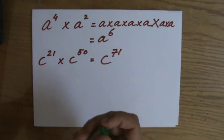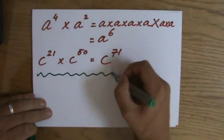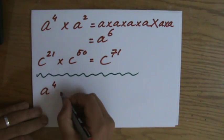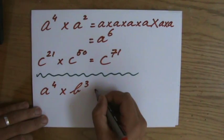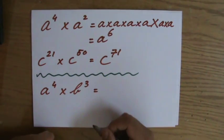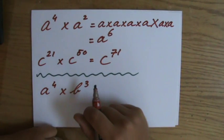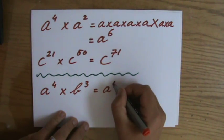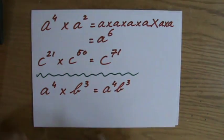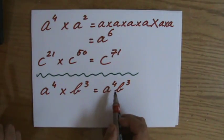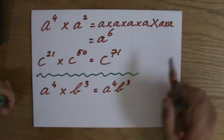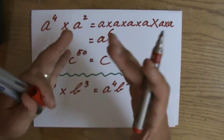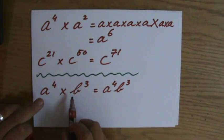I want to emphasize again that the base needs to be the same. So a to the power 4 times b to the power 3 — is the base the same? No. So can I apply the first law of the indices? No. The answer to this question would be a to the power 4, b to the power 3. You just glue those letters together, taking out the times sign. I cannot simplify that into one expression because the bases are not the same.